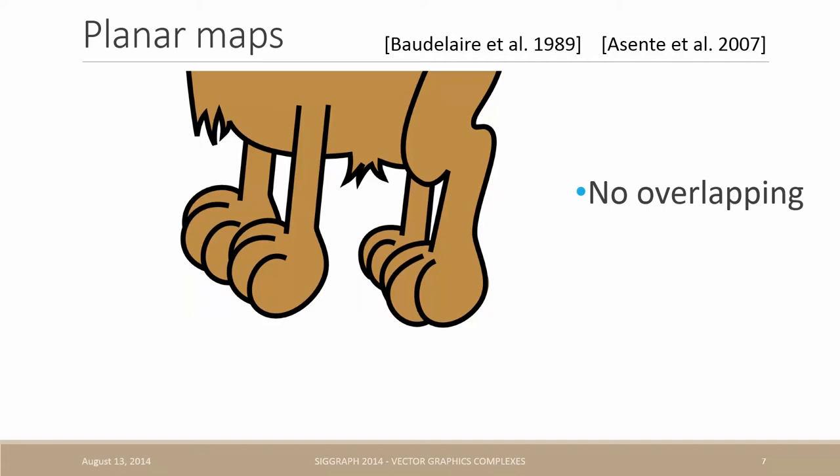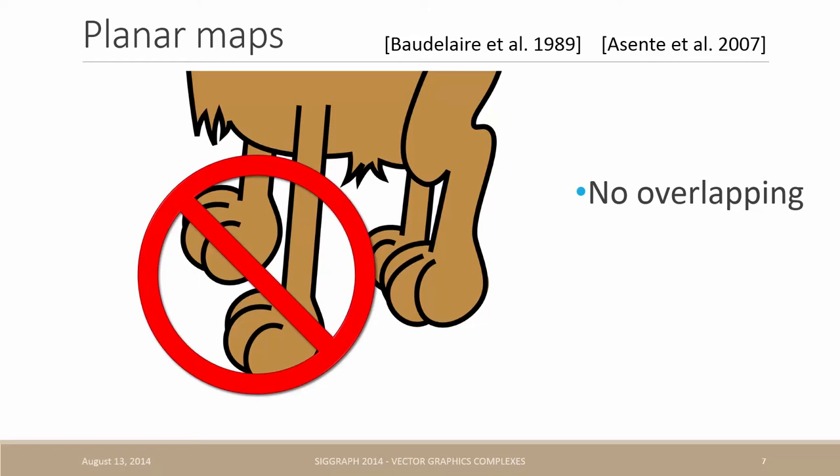So instead, we would prefer two overlapping legs to be able to extend one of them, revealing the other, but this is not possible with planar maps.